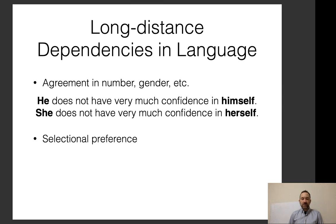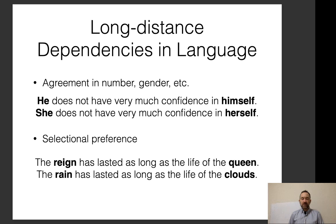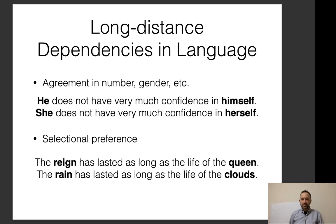Another thing is selectional preference, which essentially means semantic relationships between words, especially verbs and nouns. In this case I'm talking about two nouns: 'The rain has lasted as long as the life of the queen' versus 'the life of the clouds,' where in my variety of English there's no difference in pronunciation. So you would need to handle this long-distance dependency to do appropriate speech recognition and get the spelling correct.